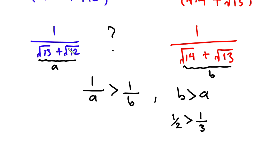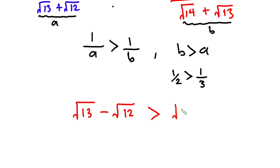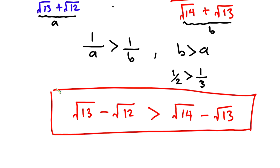So straight away we can say that square root of 13 minus square root of 12 is greater than square root of 14 minus square root of 13, and this is the final answer. Let me know your thoughts in the comment section. Thanks a lot for watching, and like this video so that YouTube will recommend it to other people. See you again on the next video.